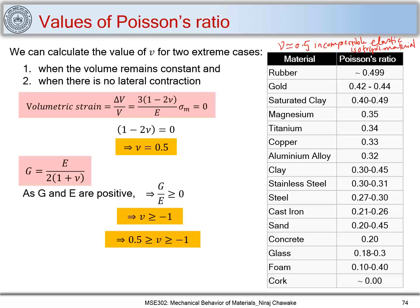Rubber nearly reaches 0.5, with a value of about 0.499. At the other extreme, cork shows a Poisson's ratio of 0. Poisson's ratio is defined as lateral strain divided by longitudinal strain, so when it is 0, no lateral strain develops when you deform the material in one direction — cork does not show lateral strain when deformed.